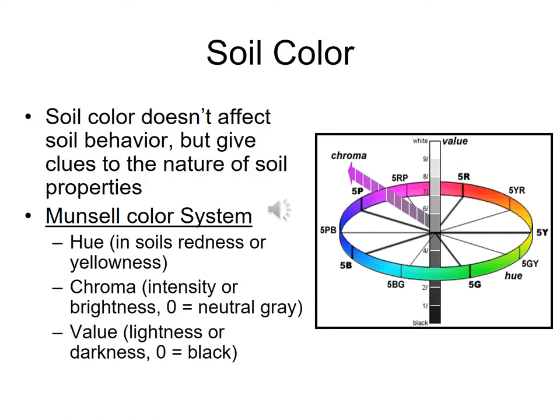Soil color is another physical property that can help clue you into the type of soil. The Munsell color system is used in art, textiles, and soils. It has three aspects of color: hue, chroma, and value. Hue is what we think of as the color itself, chroma is the intensity of that color, and value is the lightness or darkness.